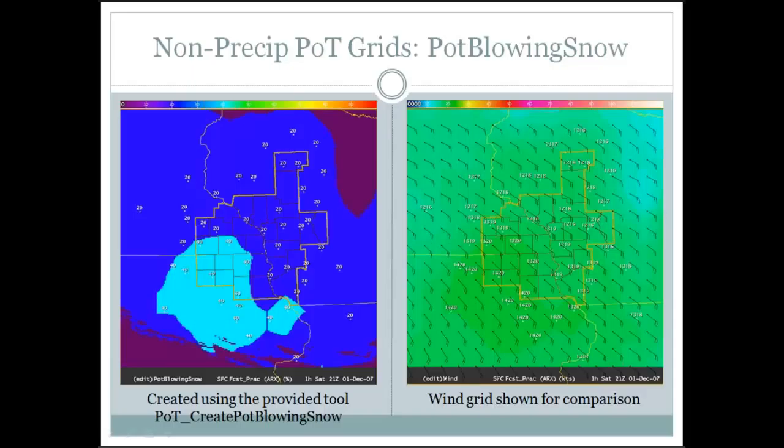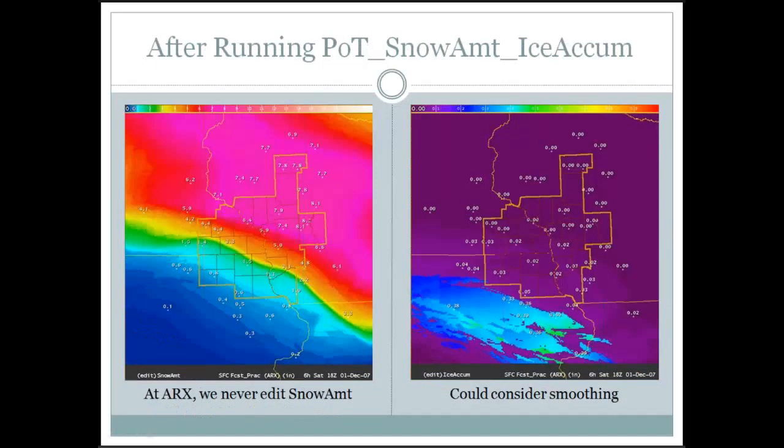Next, talking about some non-precipitating probability grids — in this case just using the blowing-snow tool. The blowing snow will use your wind grid and POP. I've added a new option to use your snow ratio as well, because that makes it better correlated in mixed precip scenarios where you may not want blowing snow where there's freezing rain.